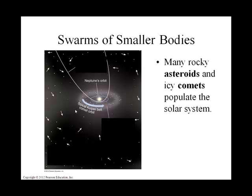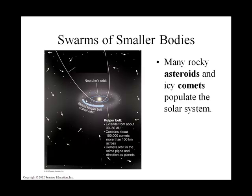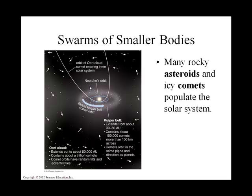Another piece of the puzzle is those crumblies beyond Neptune's orbit. There are two types. There's the Kuiper belt — Neptune's orbit is shown in blue — and Pluto and Eris are Kuiper belt objects, along with other icy, rocky objects. The other crumblies are in a place called the Oort cloud, which is even farther away and is spherical with the sun and our solar system at the center.